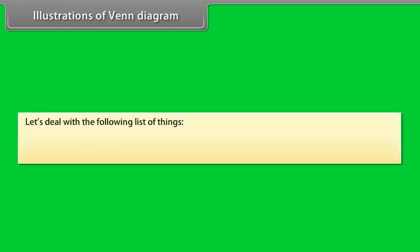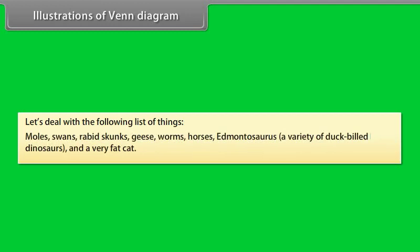Let's deal with the following list of things: Moles, Swans, Rabbit, Skunks, Geese, Worms, Horses, Edmontosaurus, a variety of duck-billed dinosaurs, and a very fat cat.